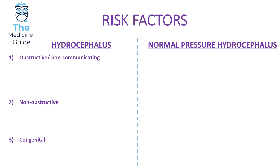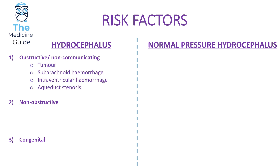A hydrocephalus can present in three different ways. First, an obstructive or non-communicating hydrocephalus is when there is some obstruction leading to dilation of the ventricular system, and CSF accumulates behind the obstruction. Examples include a tumour, subarachnoid haemorrhage, intraventricular haemorrhage, or aqueduct stenosis — all leading to obstruction, ventricular dilation, and CSF accumulation.